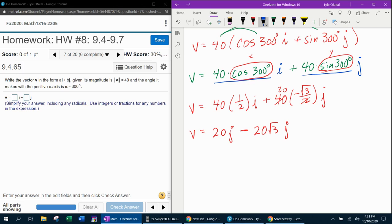And so now I have my vector in terms of A i plus B j, where A is 20 and B is negative 20√3.